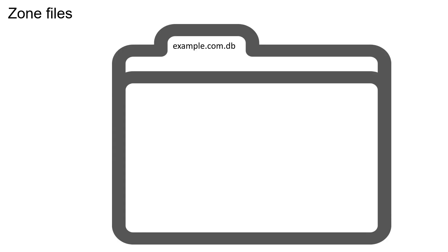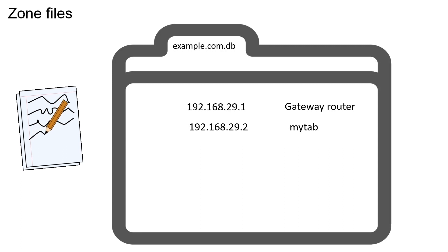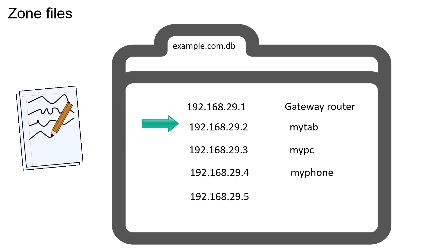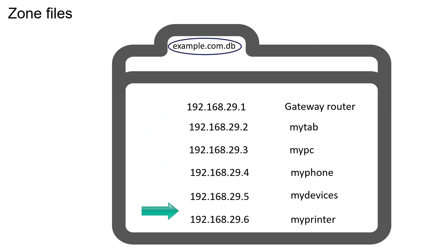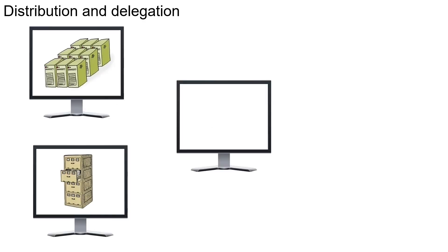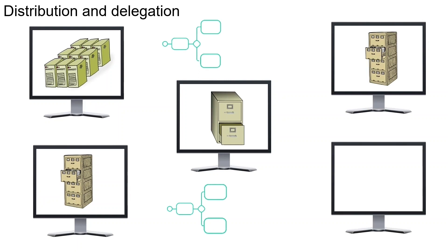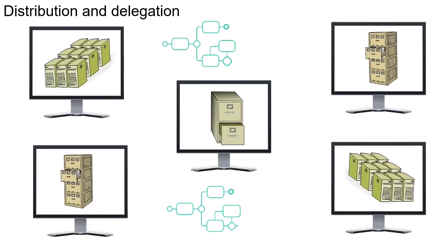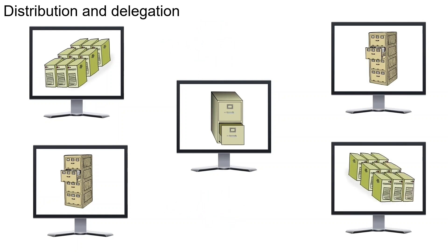DNS uses zone files to save resource records. Zone files are simple text files in which resource records are saved in lines. A zone file saves data of a domain in the DNS database. The DNS database is the collection of all zone files. Although administrators can save all zone files on a single DNS server, they save them on multiple servers for easy management and scalability.